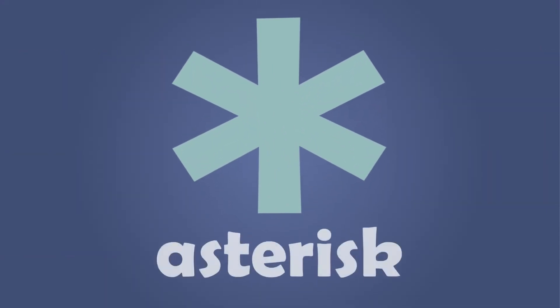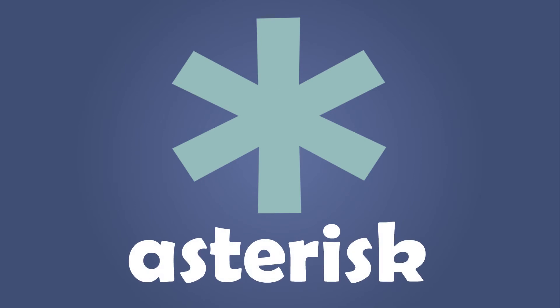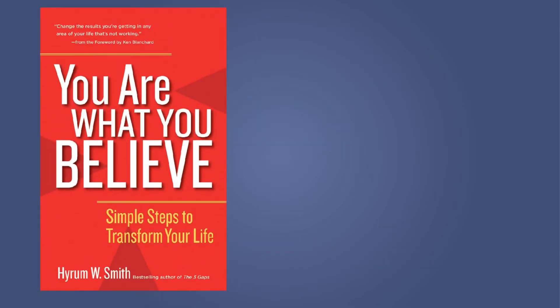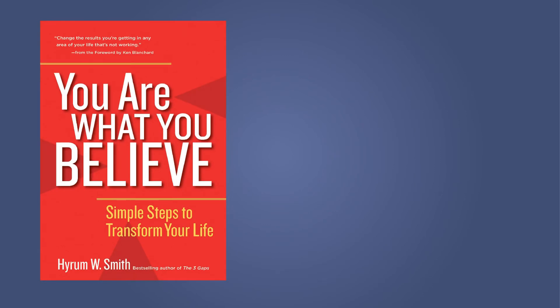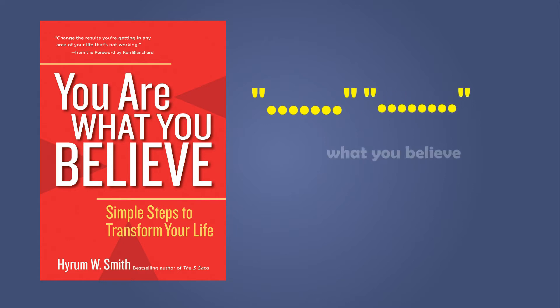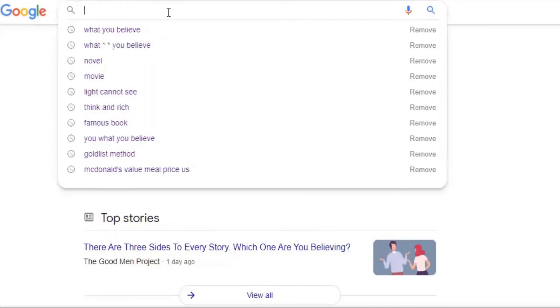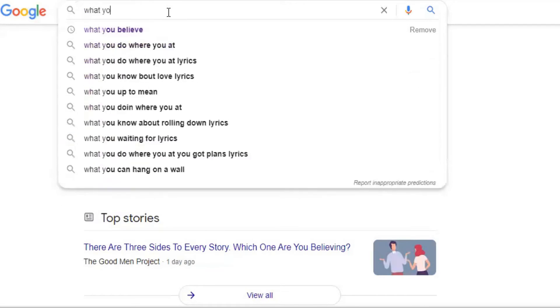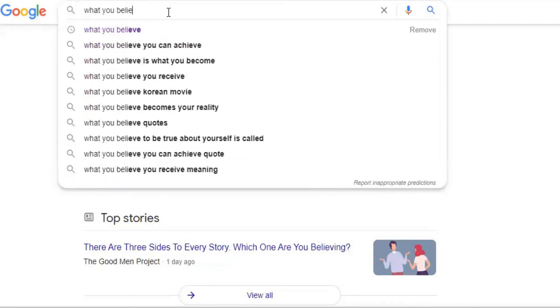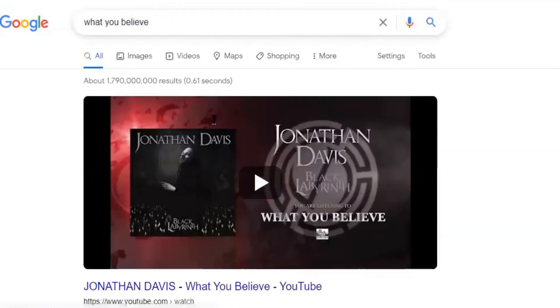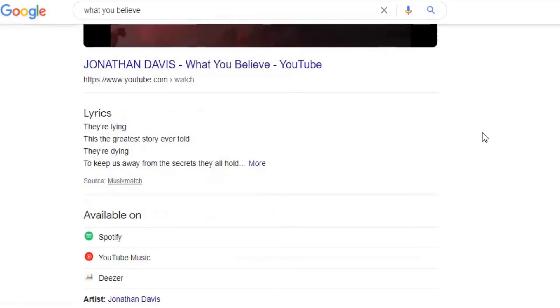The trick is just by using the asterisk symbol. Let's say you want to find the name of a book titled 'You Are What You Believe,' but you forgot the full name. You just remembered something like '...what you believe.' If you just type the words you remembered — 'what you believe' — the results will show a bunch of other non-related websites.